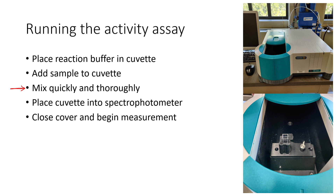You want to mix quickly so you can get that cuvette into the spectrophotometer as soon as possible to get an accurate reading for that initial velocity, because over time that reaction rate slows down and you might get a worse estimate of how much LDH you have if you wait too long. You also want to mix thoroughly — if you have uneven mixing you might get pockets in the cuvette where the reaction is happening faster or slower, and you might get air bubbles, all of which can make your reading more inaccurate.